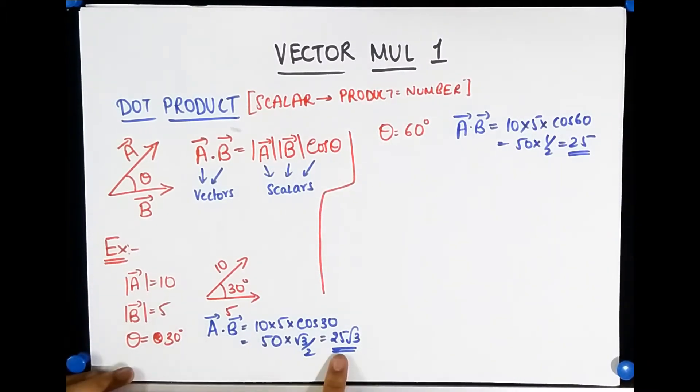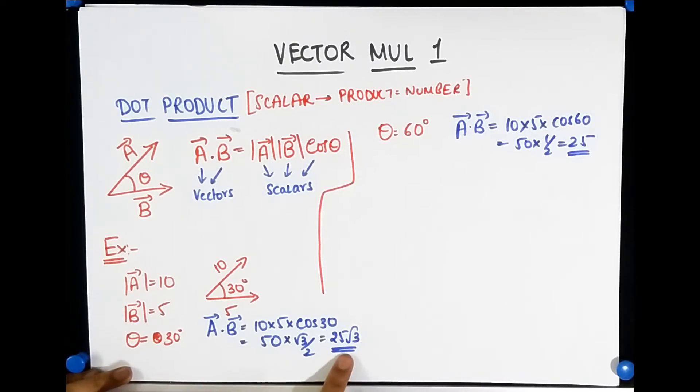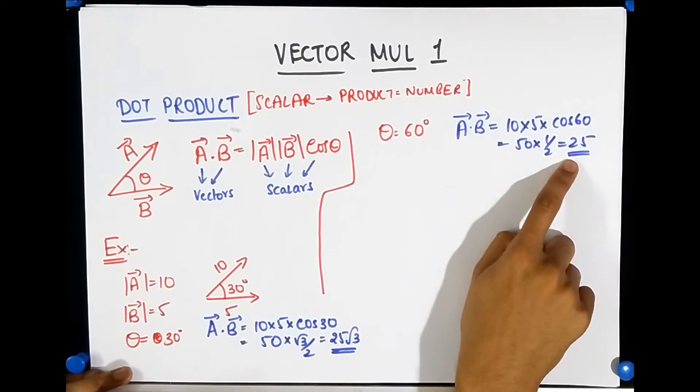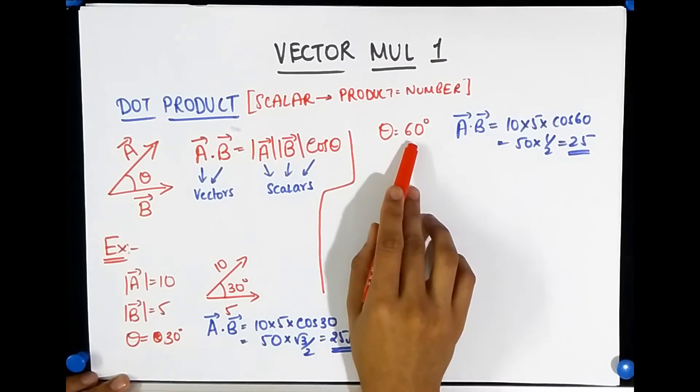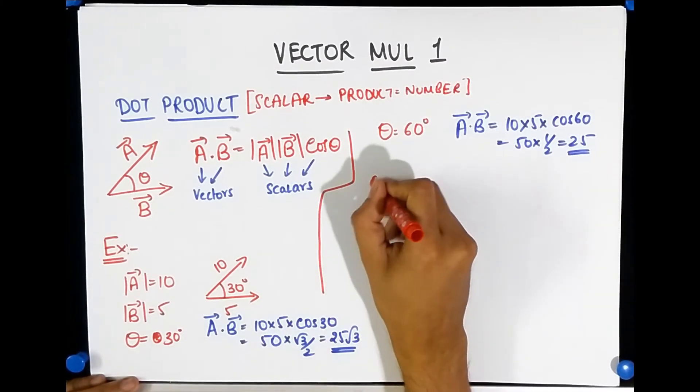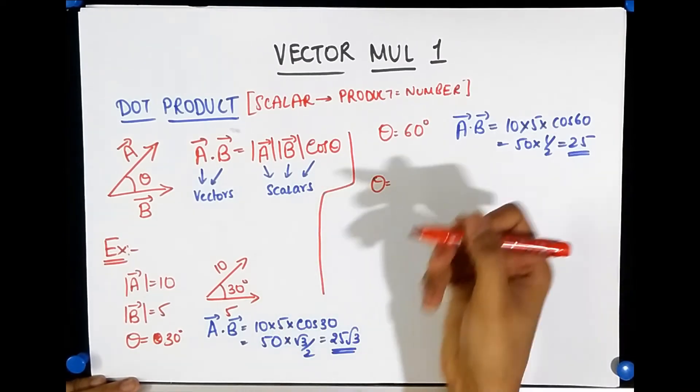Notice what happened here. Here 25 root 3, so the value was bigger and the value became smaller. So as theta increases, as your angle is increasing, your dot product is decreasing. So what do you expect to happen if the angle increased even further?